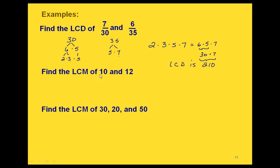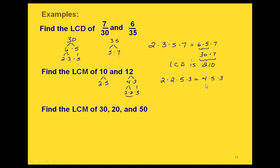Now we'll find the least common multiple of 10 and 12, which is the same thing we're doing with our denominators. We do prime factorizations: 10 is 2 times 5, and 12 is 2 times 2 times 3. Looking at the factor 2: it occurs twice in 12, so we write it down twice. 5 only occurs once in 10, so we write it down once. 3 occurs once in 12, so we write it down once. Multiplying: 4 times 5 times 3 is 20 times 3, which gives us 60. That's our least common multiple.